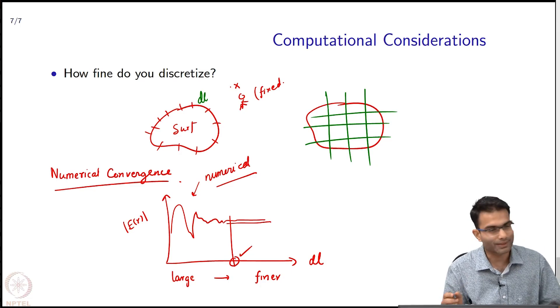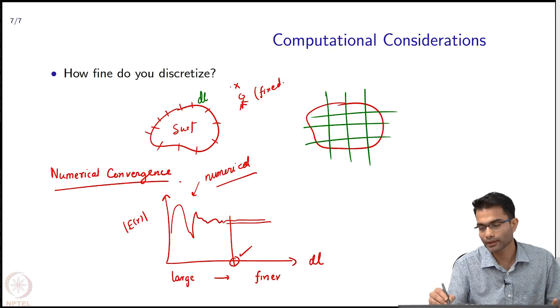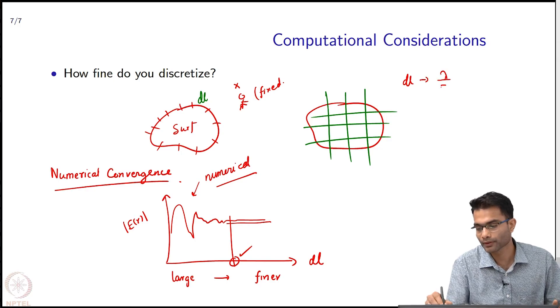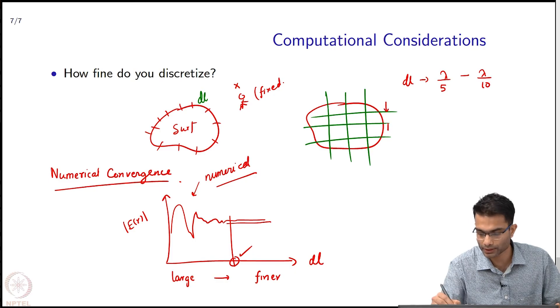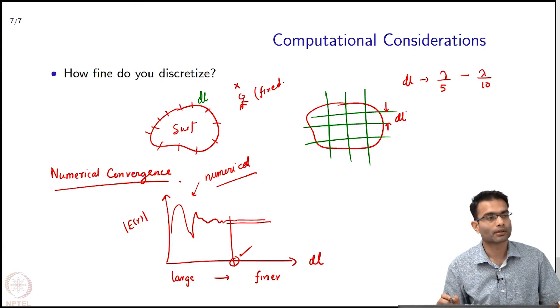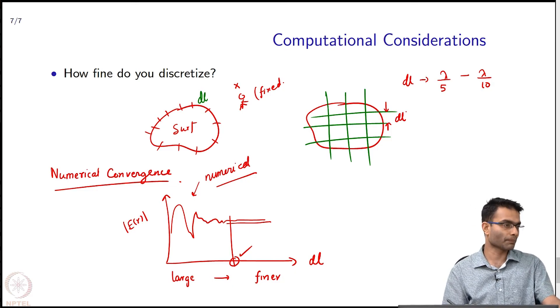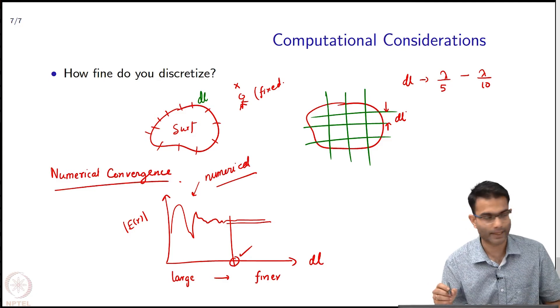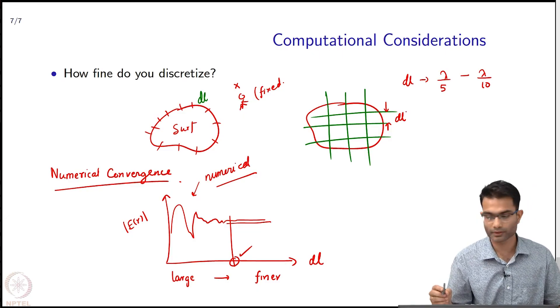Now, people have done these tests a lot. So there is also a rule of thumb over here that you pick your DL to be in the range of lambda by 5 to lambda by 10. This is DL in this case. Picking it in this range gives you a - it's a rule of thumb, it may be wrong or right, it depends on the object. But in general if you have a sort of well behaved object, choosing it between lambda by 5 and lambda by 10. What is lambda? Lambda is the wavelength of the incident field.